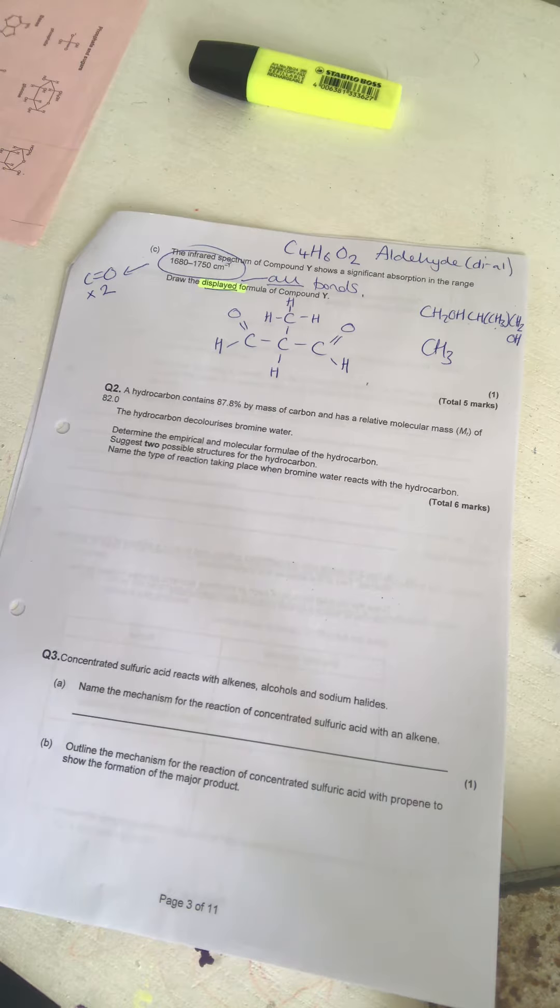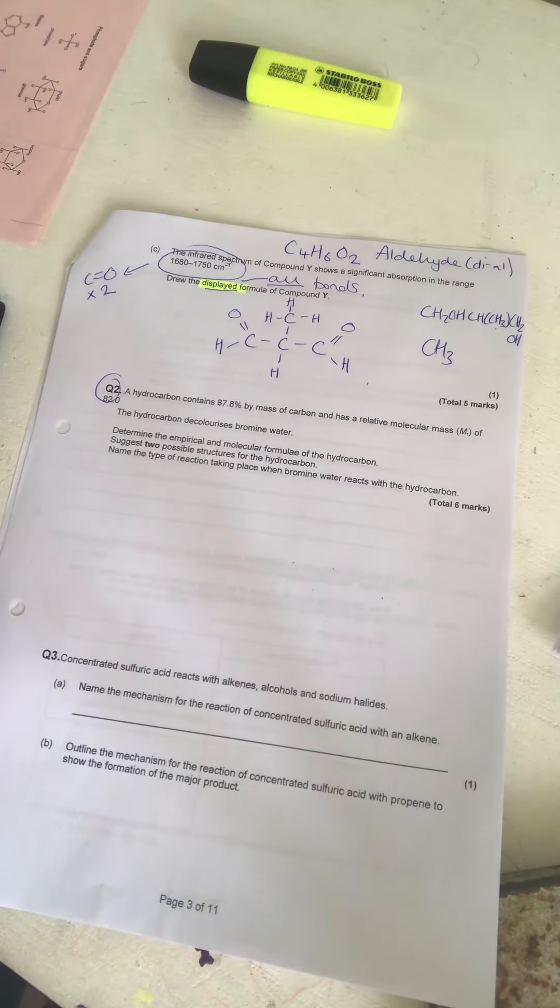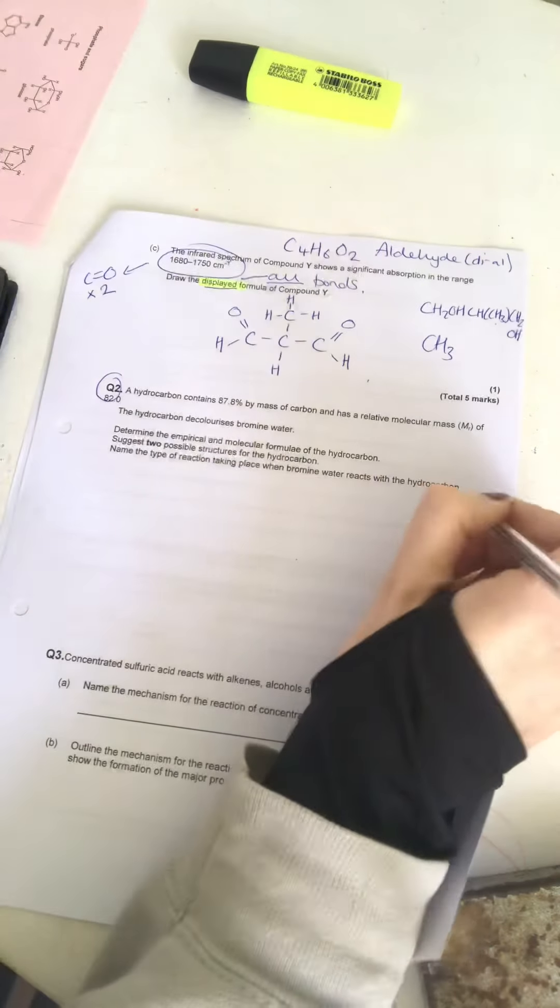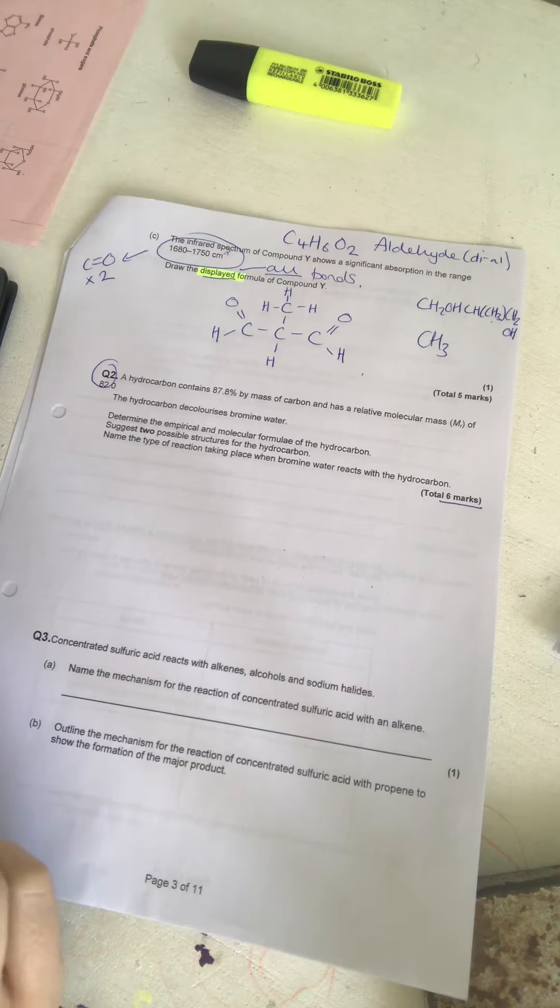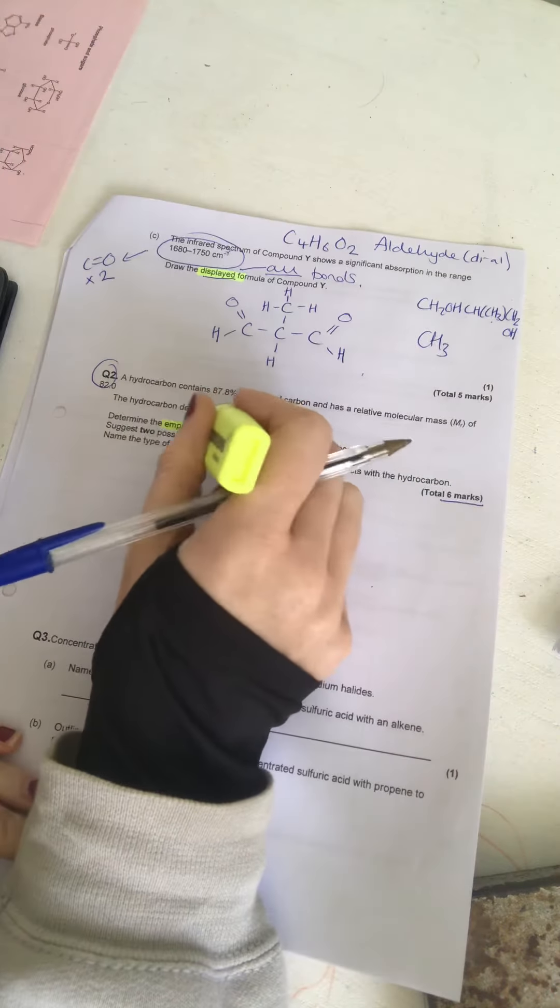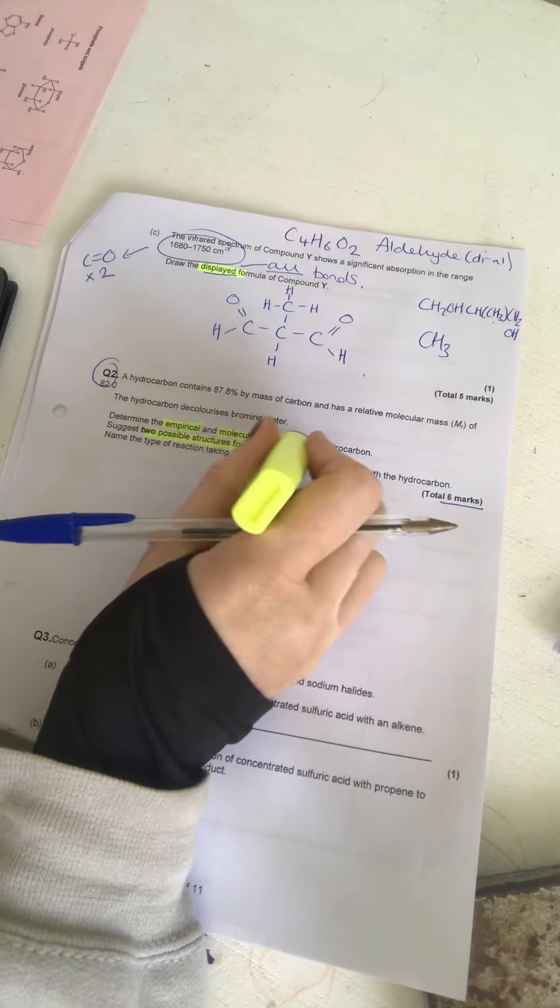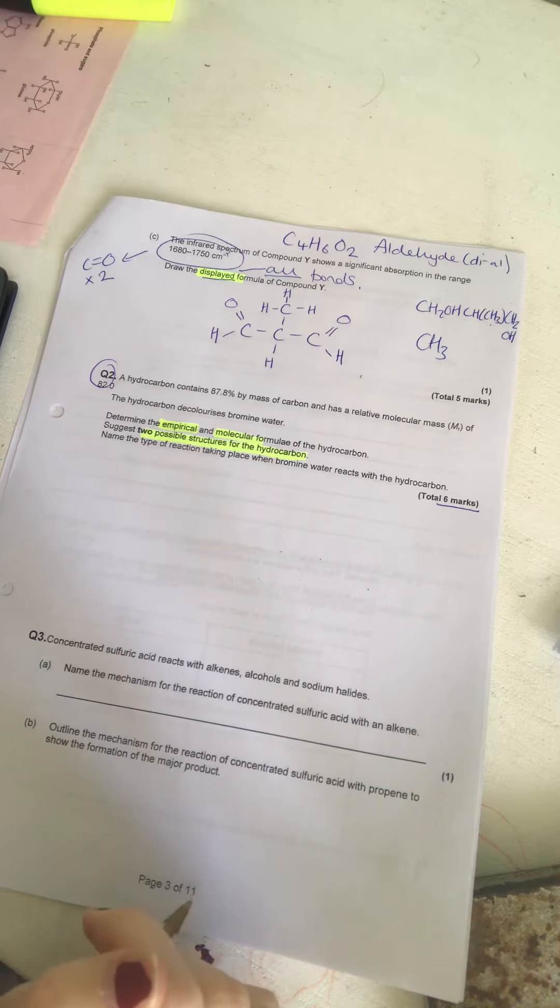Hi Year 12, I'm going to do in this video question 2 of the Unit 6 endotopic test which is a 6 mark question and a few stages involved. You need to calculate the empirical and molecular formula of a hydrocarbon and you need to suggest two possible structures for the hydrocarbon. People tend to struggle with deducing structures of things, so let's have a look and go through.